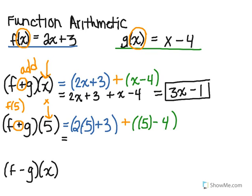If I simplify the first function, well 2 times 5 is 10, plus 3 is 13, plus 5 minus 4 is 1. So our result is 14.